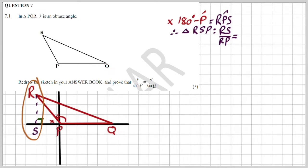That is opposite over hypotenuse. Because remember, I'm looking in that triangle there. And this is sin of angle RPS. So therefore, RS is equal to RP times sin of 180 minus P.